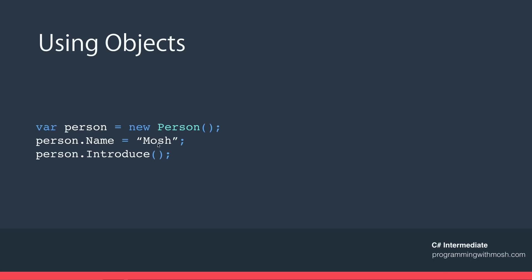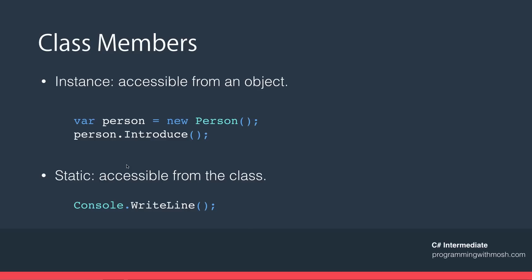Before coding, let's talk about class members. In C# we have two types: instance members and static members. An instance member is accessible from an object — we create a Person object and call introduce on it. A static member is accessible from the class itself, not an object. An example is Console.WriteLine: Console is a class and WriteLine is a static method, so we don't need to create an instance of Console with `new` to call it.